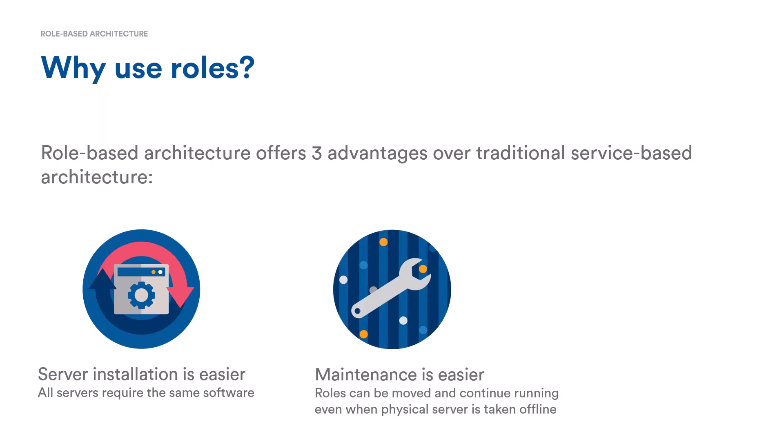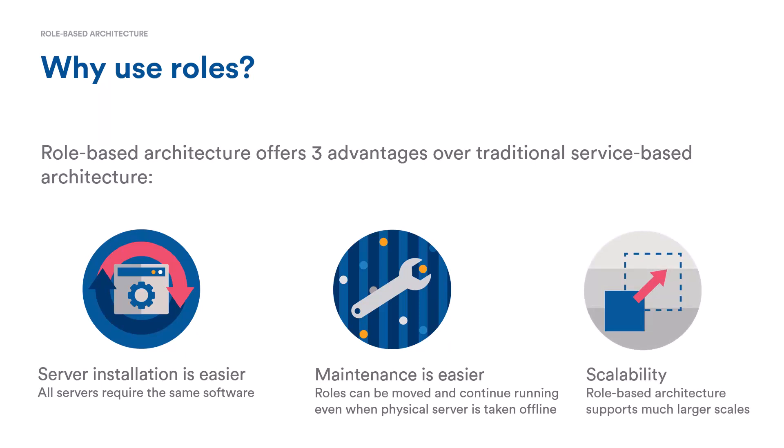Second, maintenance of a running system becomes easier. If you need to upgrade the RAM on your report manager, you can simply move that role to another server, take the original server offline, do the hardware upgrade, bring it back online, and move the role back. When all servers have the same software, you can move roles from one server to another. Third, scalability — role-based architecture is the underlying architecture for large grid computing or cloud computing platforms, supporting much larger scales than traditional service-based architectures.